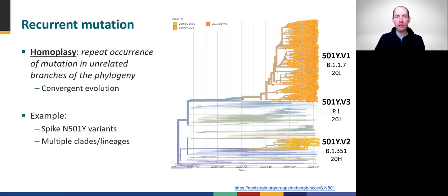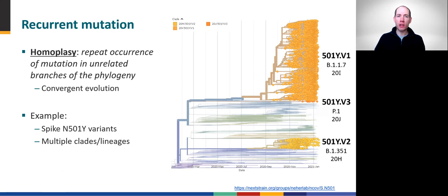Some variants get our attention because they feature defining mutations observed multiple times across the global SARS-CoV-2 phylogeny. The general phylogenetic term to describe this phenomenon is homoplasty, which refers to the observation of a mutation in multiple parts of the tree that don't share a common ancestor. Often this can be interpreted as convergent evolution, suggesting that the mutation has appeared multiple times because it confers a beneficial property to the virus. One example is the frequent mutation of the spike protein at position 501. The phylogenetic tree highlights three separate mutations at position 501 to tyrosine (abbreviated Y), and although each of these three variants has a clade or lineage-derived name, they exhibit similar properties because mutation at this site is believed to increase host receptor binding during infection.